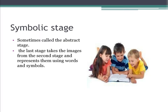The symbolic stage, from 7 years and up, is when information is stored in the form of a code or symbol such as language. Each symbol has a fixed relation to something it represents. For example, the word 'dog' is a symbolic representation for a single class of animal. Symbols, unlike mental images or memorized actions, can be classified and organized. In this stage, most information is stored as words, mathematical symbols, or in other symbol systems.